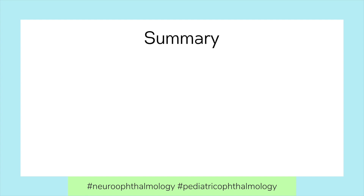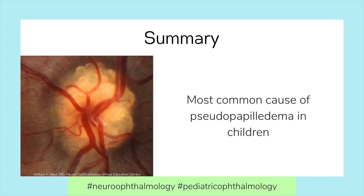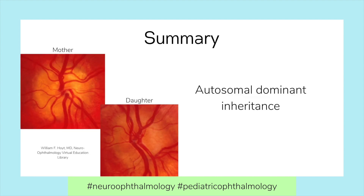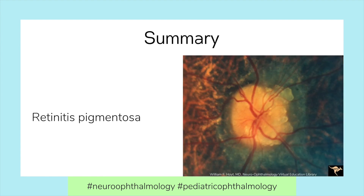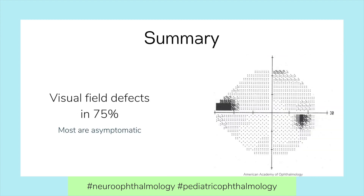In summary, Optic Disc Drusen are hyaline or calcium deposits at the optic nerve head, thought to be a byproduct of abnormal mitochondrial metabolism and axonal transport within the ganglion cell layer axons. They are the most common cause of pseudopapilledema in children, bilateral in 75%, and may be inherited in an autosomal dominant fashion. Optic Disc Drusen are associated with retinitis pigmentosa and Pseudoxanthoma elasticum. Most patients are asymptomatic but may have glaucoma-like visual field defects in up to 75%, with the most common defect being an inferior nasal step.